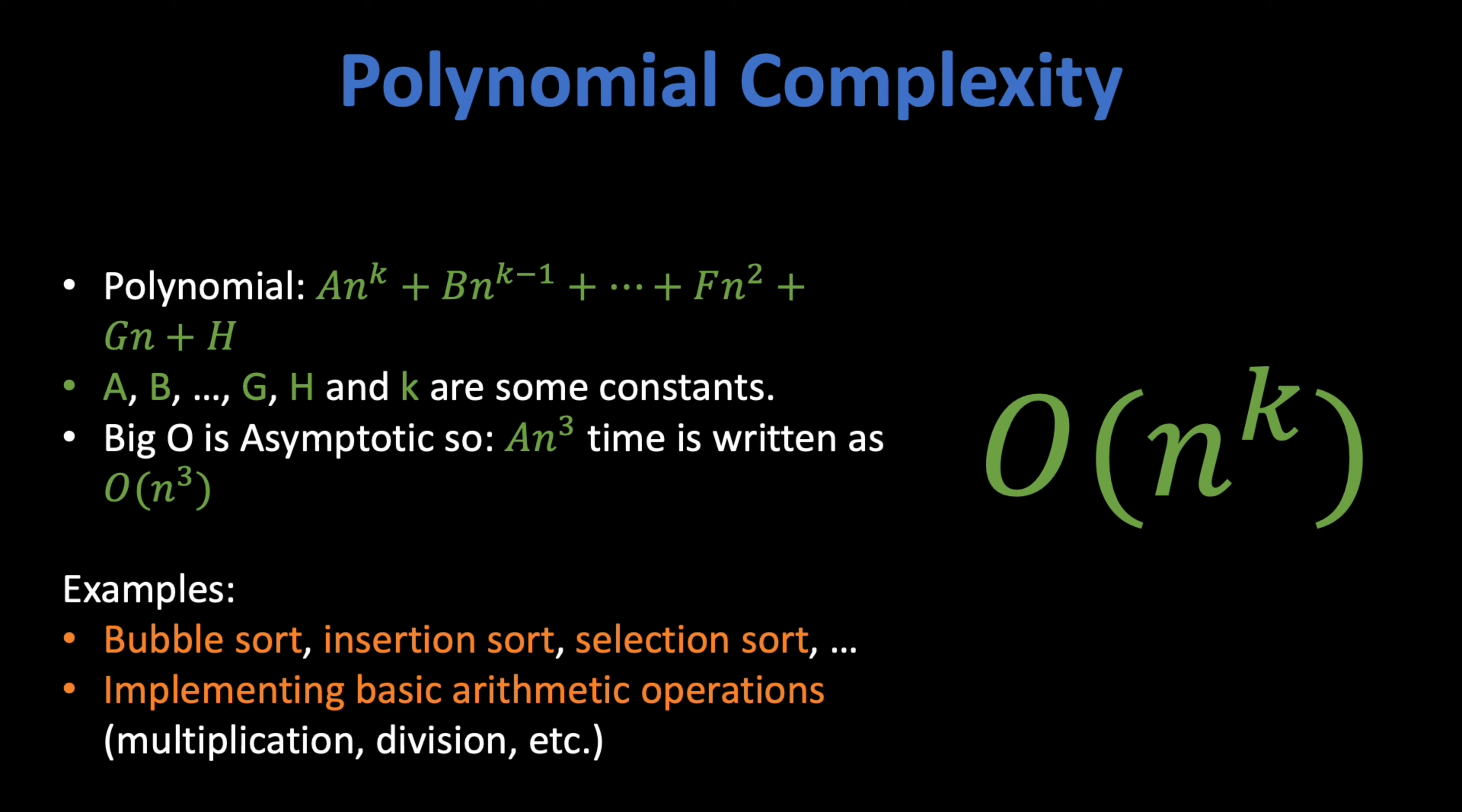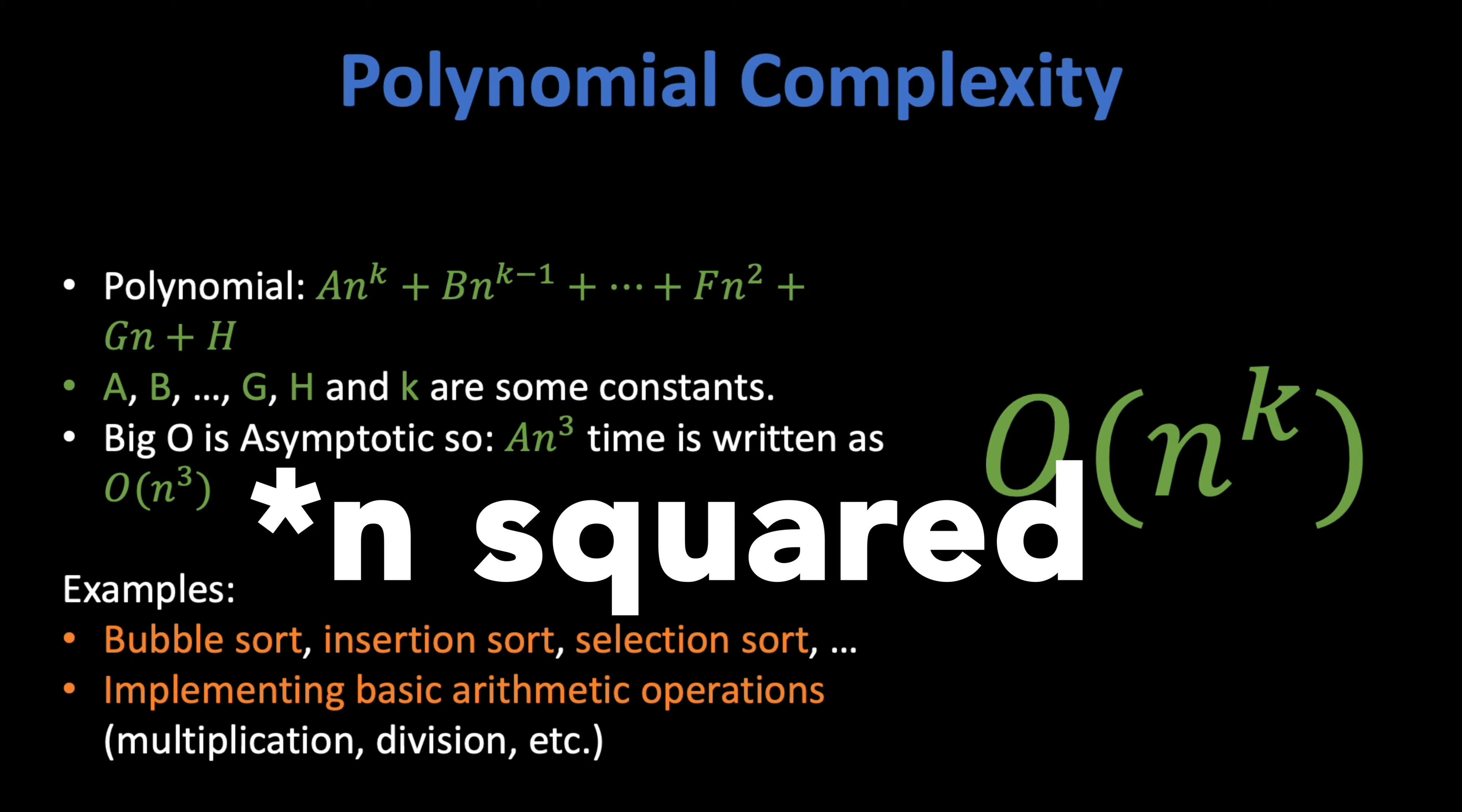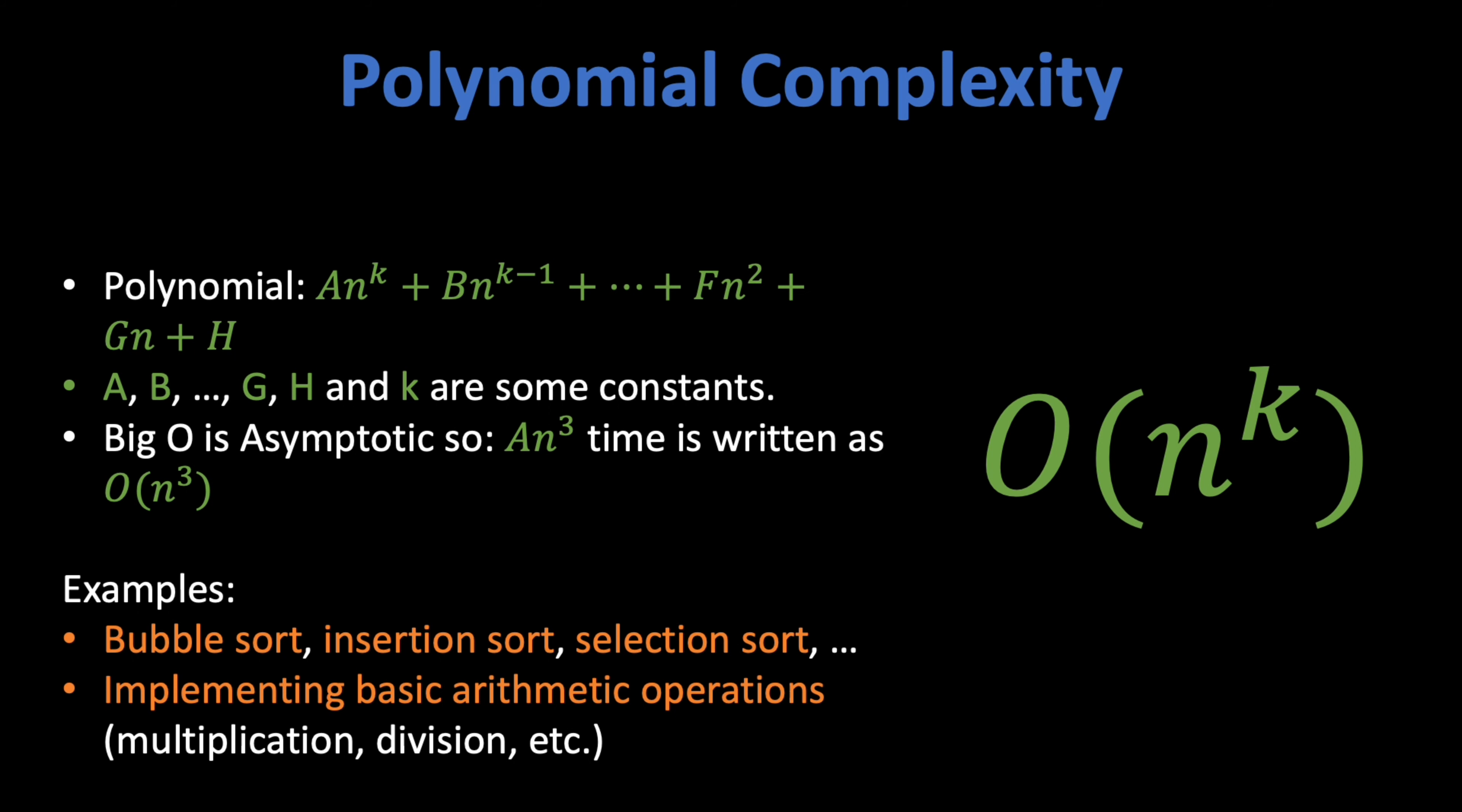O(n^2) polynomial complexity has the special name of quadratic complexity. Likewise, O(n^3) is called cubic complexity. For instance, brute force approaches to max min subarray sum problems generally have O(n^3) quadratic time complexity. You can see an example of this in my Kadane's algorithm video.